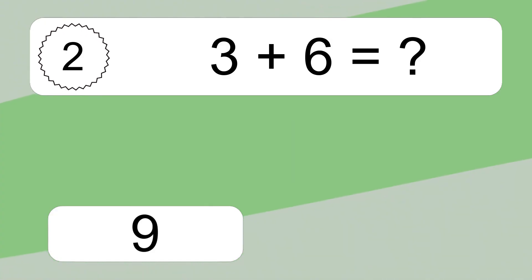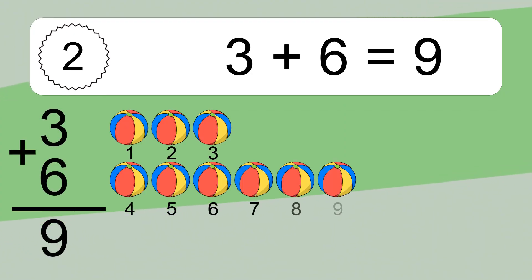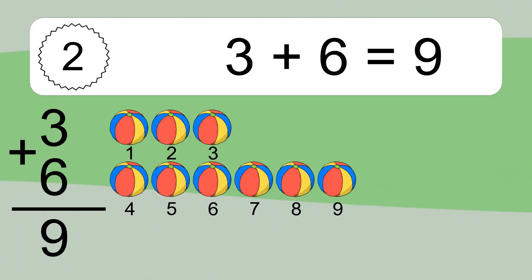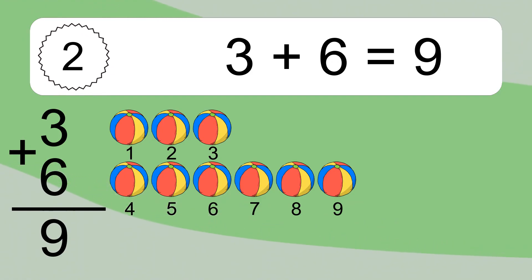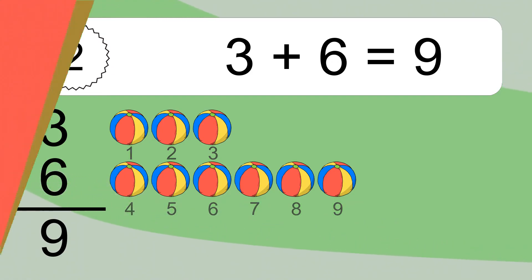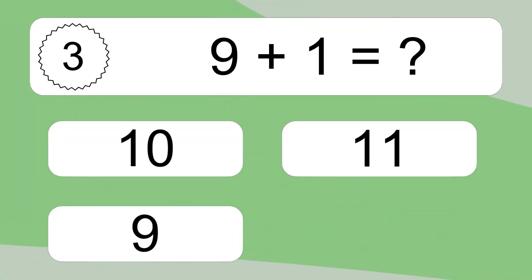Three plus six equals nine. Let's count it: one, two, three, four, five, six, seven, eight, nine. Nine plus one equals what?